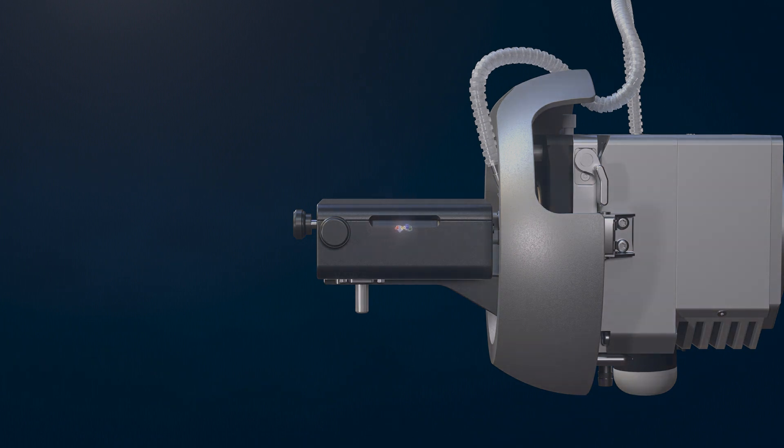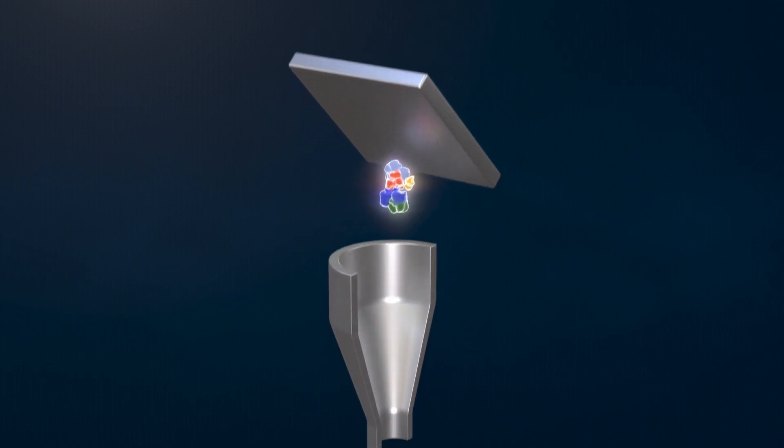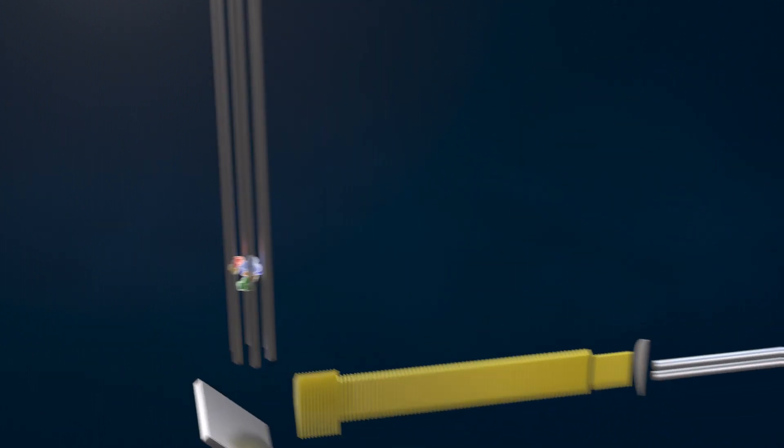After ionization, the peptides move into the TIMSS-TOF Ultra, where they are first deflected to remove contamination before they reach the TIMSS tunnel.